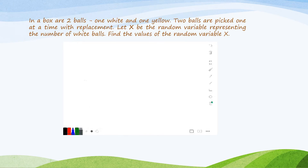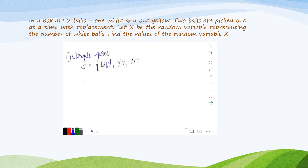Let's have the last example. In a box of two balls, one yellow and one white, two balls are picked one at a time with replacement. Let X, or capital X, be the random variable representing the number of white balls. Let us now find the values of random variable X, which is the white balls. By illustration, let us solve for the sample space. The sample space for the white and yellow ball is: white-white, yellow-yellow, white-yellow, or yellow-white.